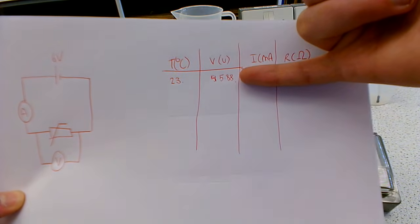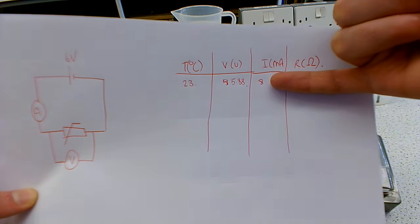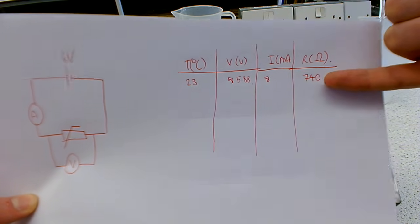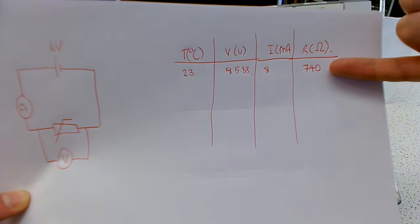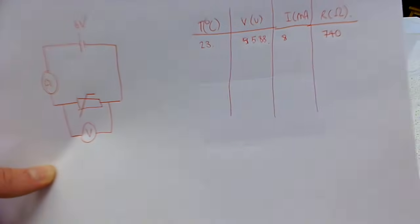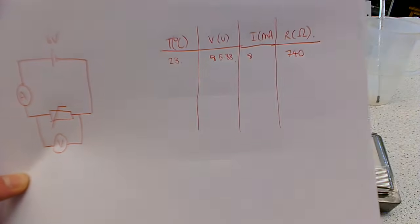we've got a potential difference of 5.88 volts and a current of 8 milliamps, giving us a resistance of 740 to 2 significant figures. This is a reading I took before I started doing anything else.